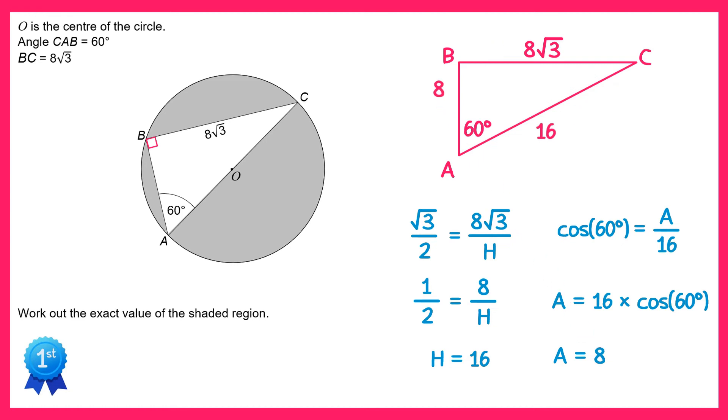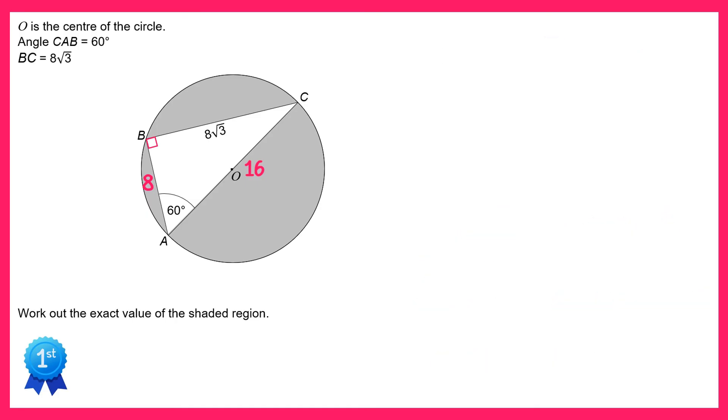We can now add both of these new lengths onto our diagram. Now to find the area of the shaded region I'm going to do the area of the triangle first, which is 1 half times the base, which is 8, times the perpendicular height, which is 8√3, and if you do this you'll end up with 32√3.